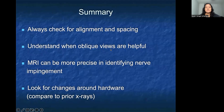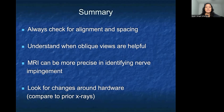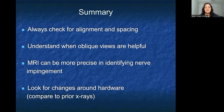In summary, always check for alignment and spacing in your cervical spine. Understand when oblique views are helpful, particularly when looking for nerve impingement — though MRI is definitely more precise for identifying nerve impingement, since soft tissue changes can also impinge on those neuroforamen. Make sure to look for changes around hardware by comparing to prior x-rays. Thank you for your attention today on our talk on the cervical spine.